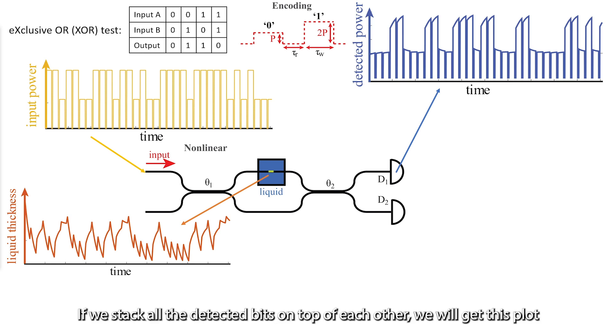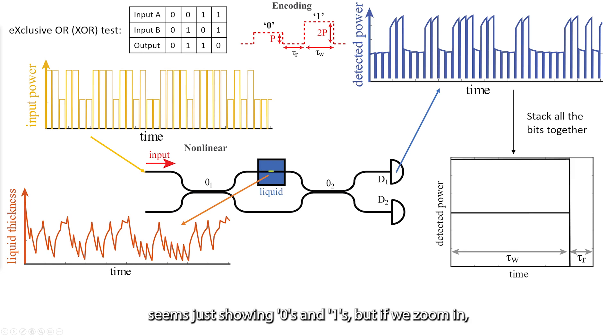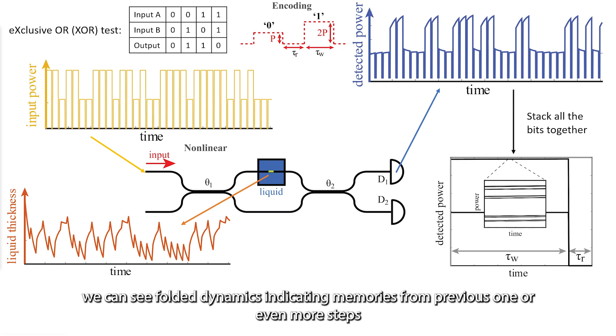If we stack all the detected bits on top of each other, we will get this plot. It seems to be just showing 0s and 1s, but if we zoom in, we can see folded dynamics indicating memories from previous 1 or even more steps.